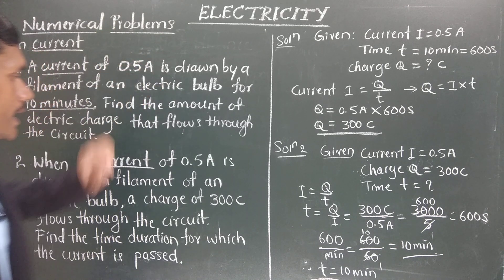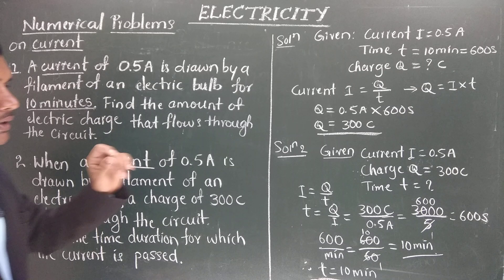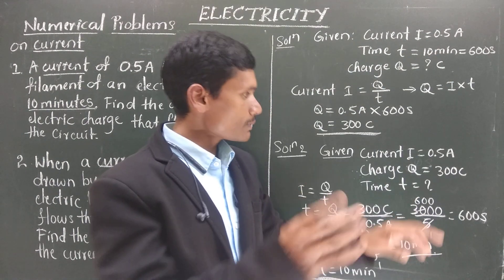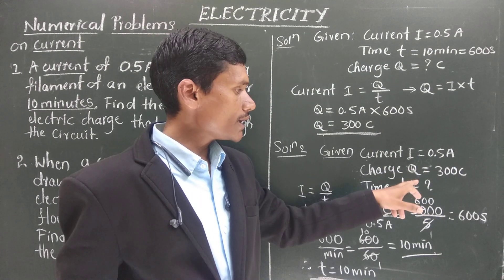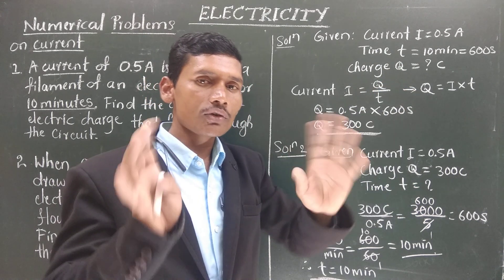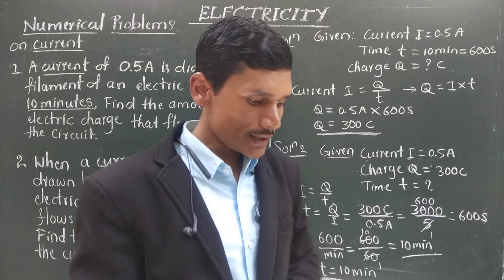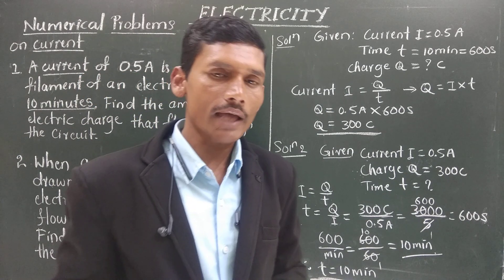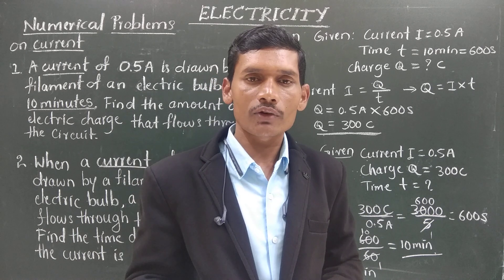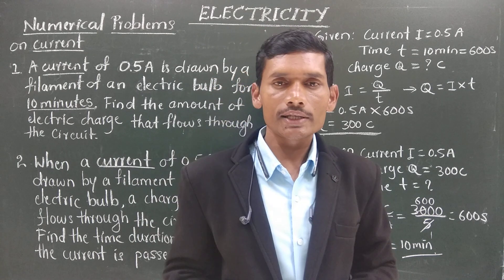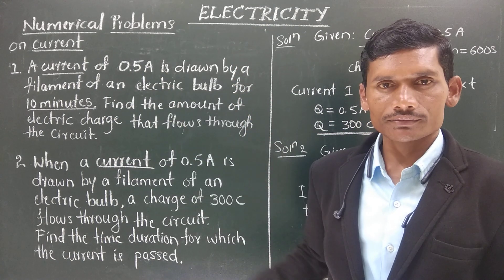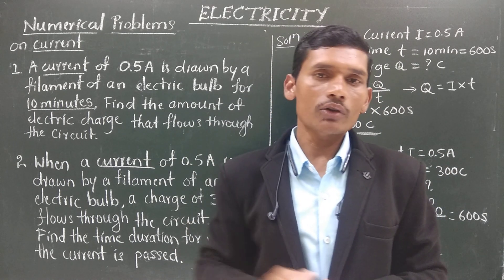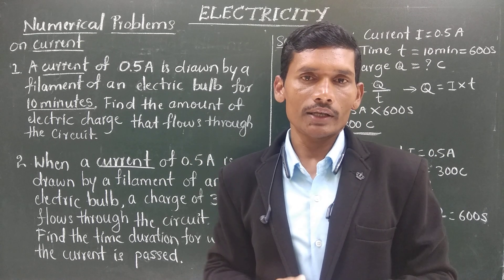In problem 1, current and time were given and charge was asked. In problem 2, current and charge were given and time was asked. In this formula there are three factors — i, q, and t. Out of three, two will always be given and one will be asked. By rearranging the formula and substituting values, you can solve any type of problem. Practice the exercises given so you understand even better.